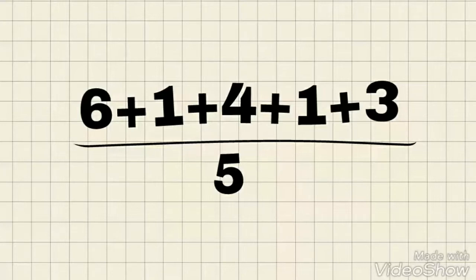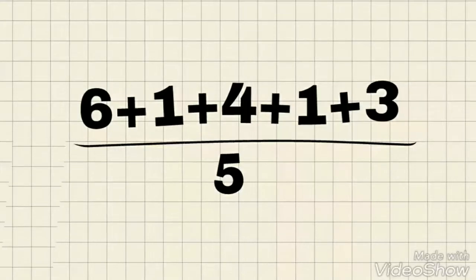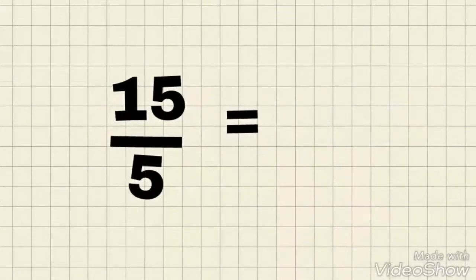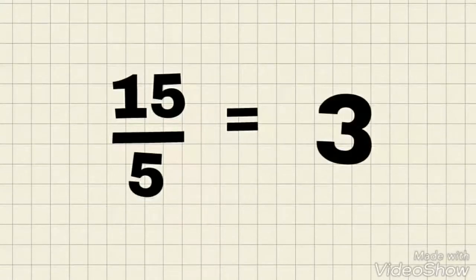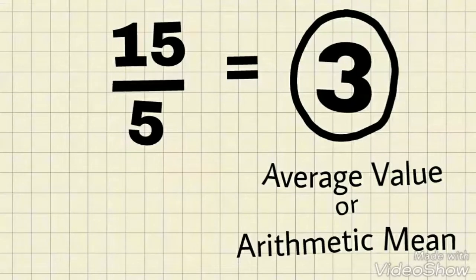plus 4 is 11, plus 1 is 12, and plus 3 is 15. So, 15 over 5 results to 3, which makes 3 our average value or arithmetic mean.